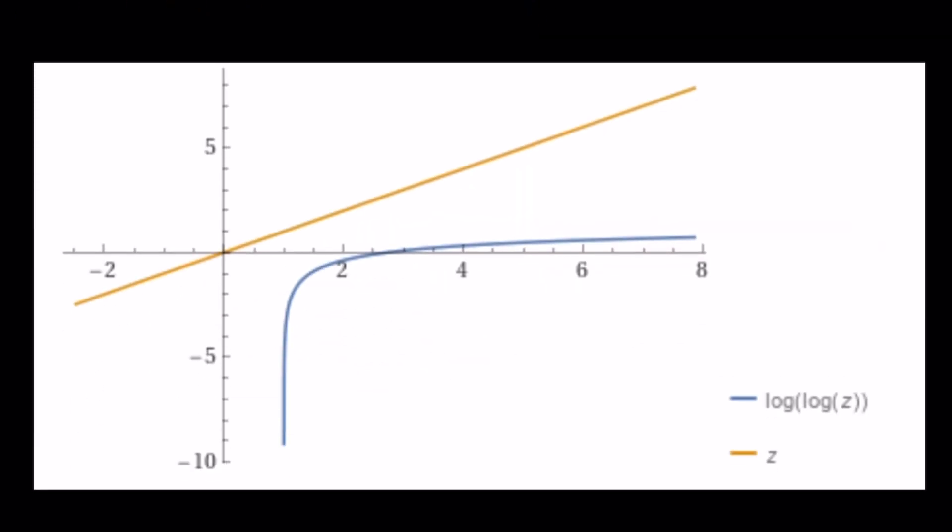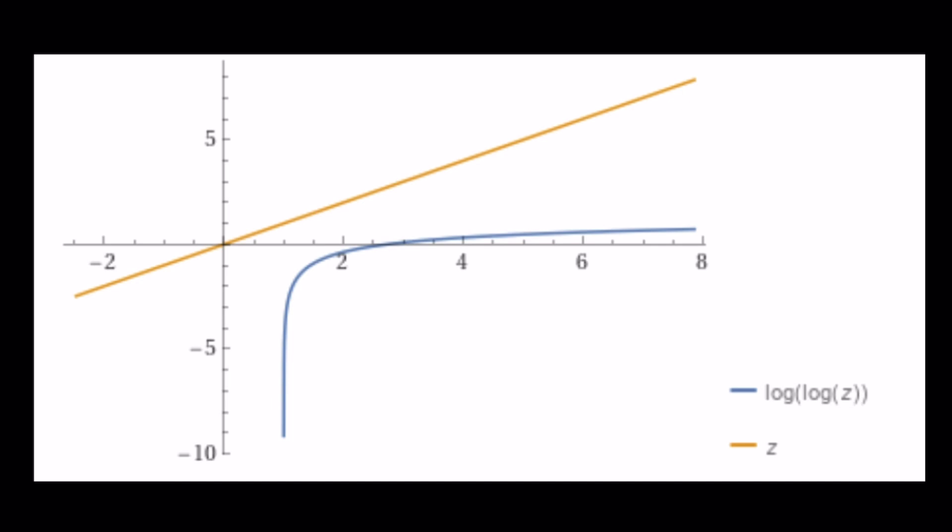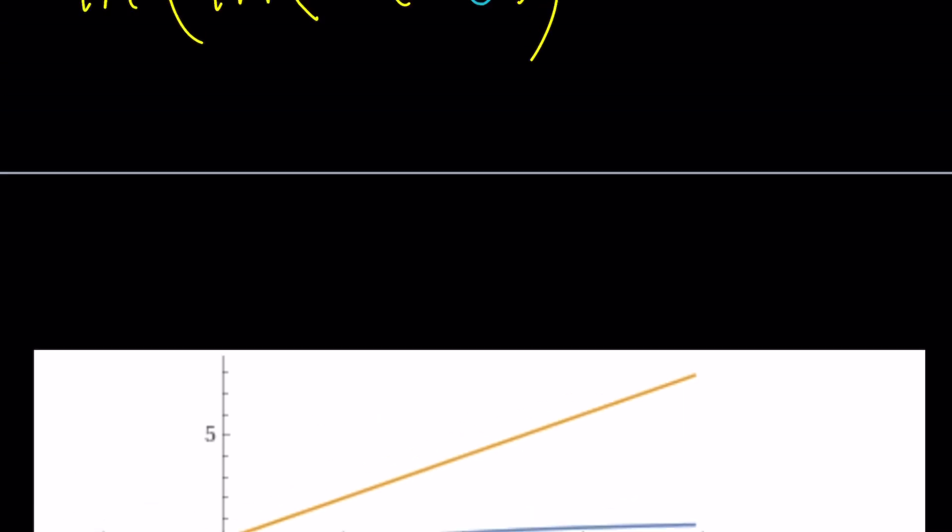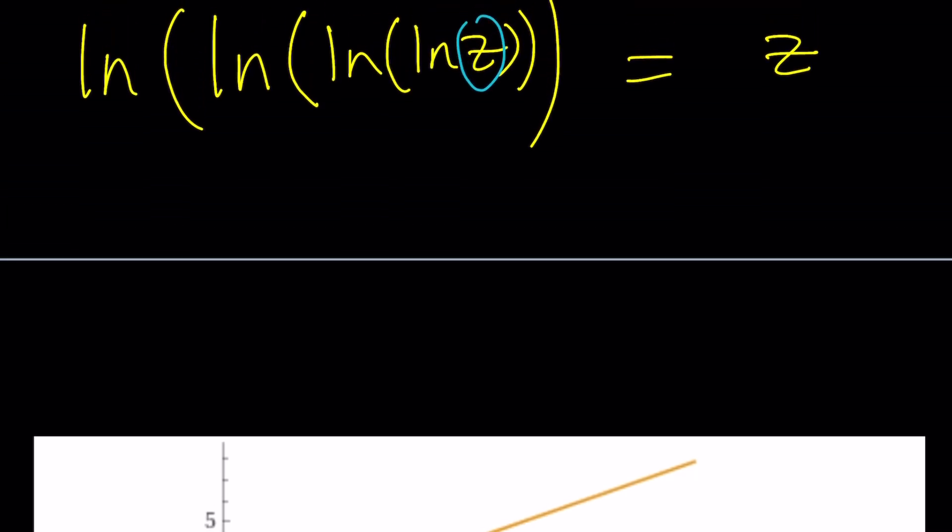Before we look at the pattern, let's go ahead and look at a graph. What does this tell you? This graph should tell you that there are no intersection points, therefore no real solutions. Great. So let's see how we can find the non-real solutions from here.